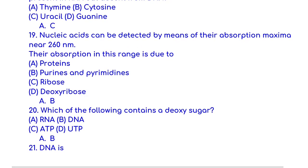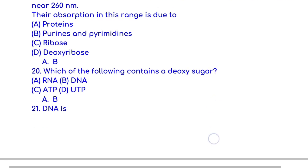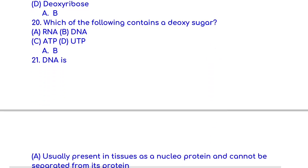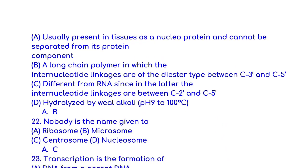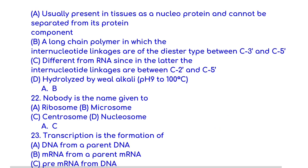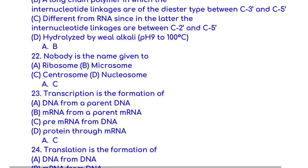Nucleic acids can be detected by means of their absorption maxima near 260 nanometers. The absorption in this range is due to purines and pyrimidines. Which of the following contains a deoxy sugar? DNA. DNA is a long chain polymer in which the internucleotide linkages are of the diester type between C3' and 5'.